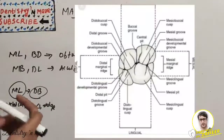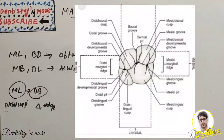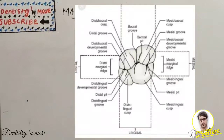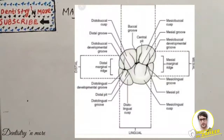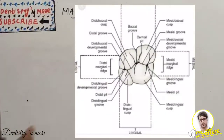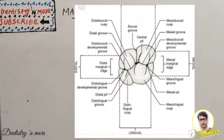The maxillary first molar is the only molar that is wider lingually than buccally. The central pit is the main pit. This tooth is a very commonly asked question — short notes may cover the occlusal anatomy, buccal side, palatal side, fossae, ridges, and grooves separately. Draw and label the occlusal picture properly. The next session will cover the maxillary second molar.